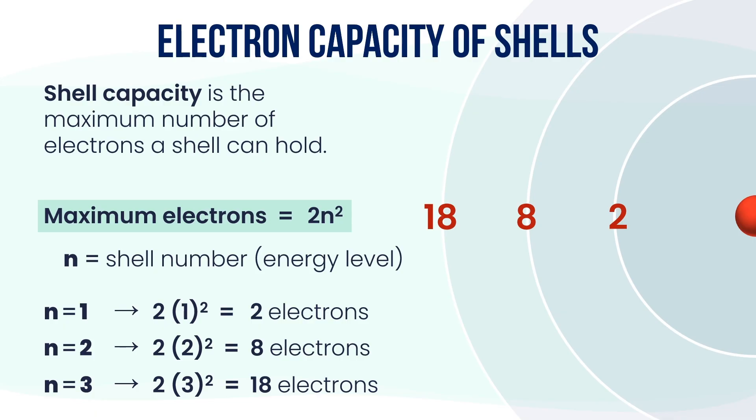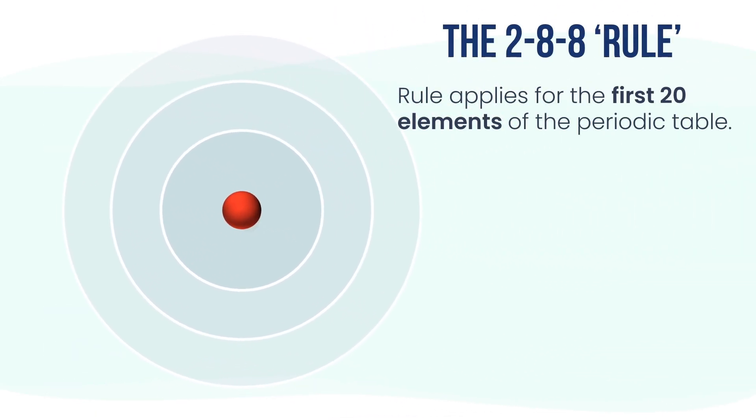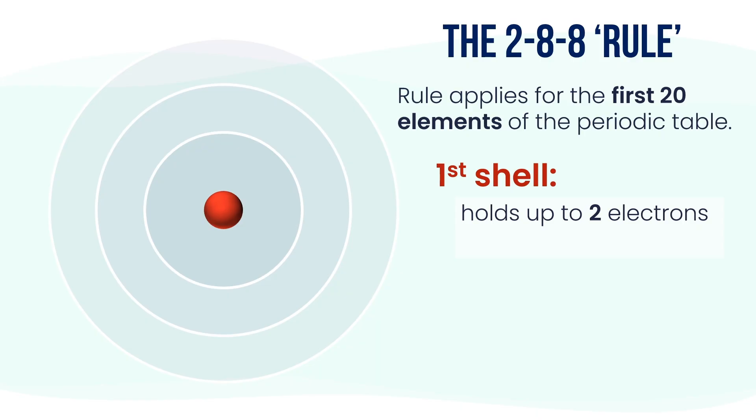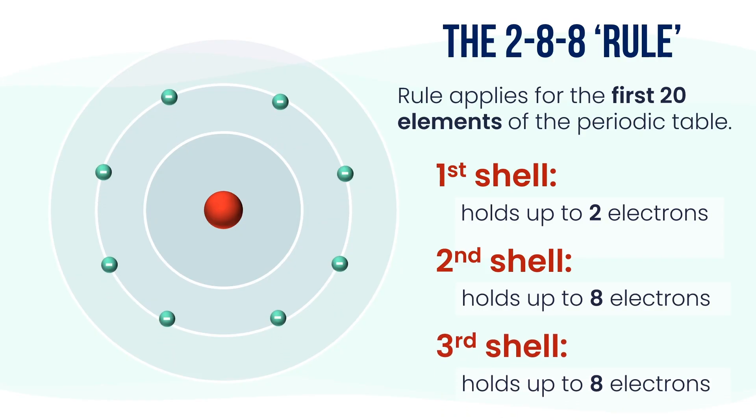But here's something interesting. For the first 20 elements in the periodic table, which are the ones we often start with, the actual distribution of electrons tends to follow a simplified pattern. The 2-8-8 rule helps us remember the electron arrangement for the first 20 elements of the periodic table. Here's how it works: the first shell holds 2 electrons, the second shell holds 8 electrons, the third shell holds 8 electrons even though it can actually hold more.